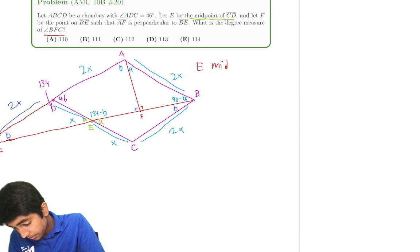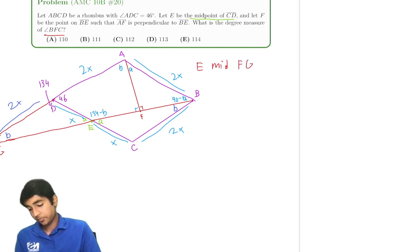So E is the midpoint of, I mean, I probably should not have called this F because there's already an F. Let's call it G. E is the midpoint of BG, right?